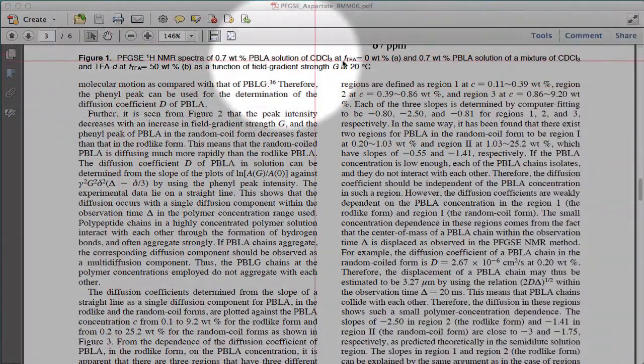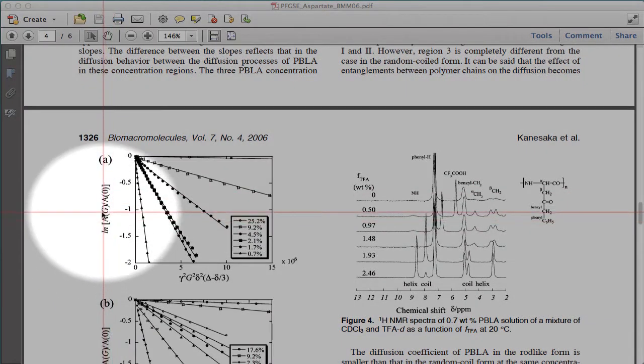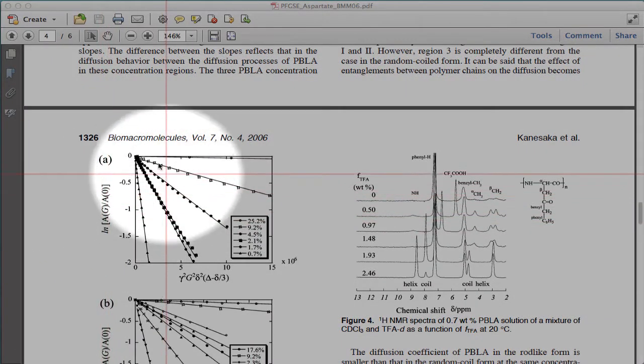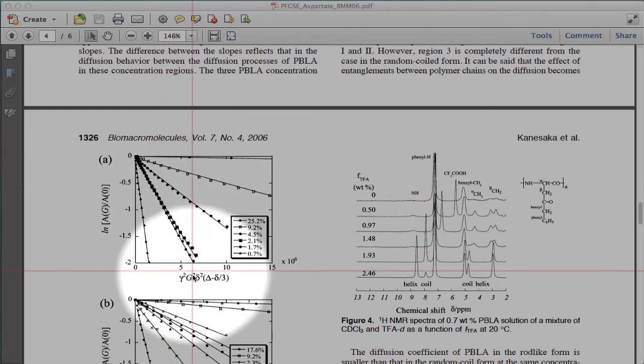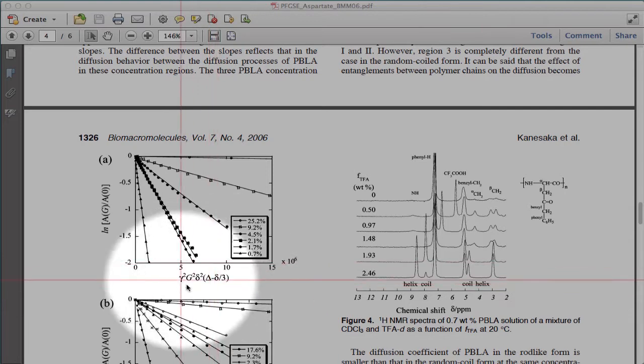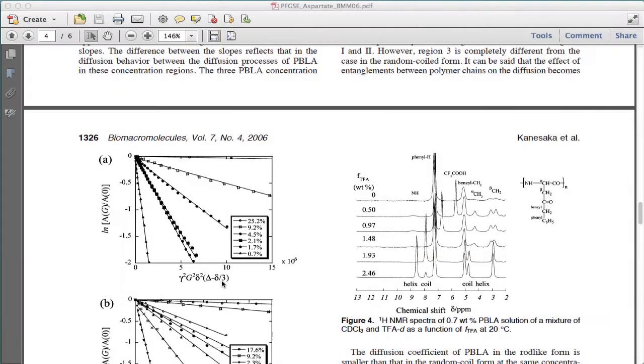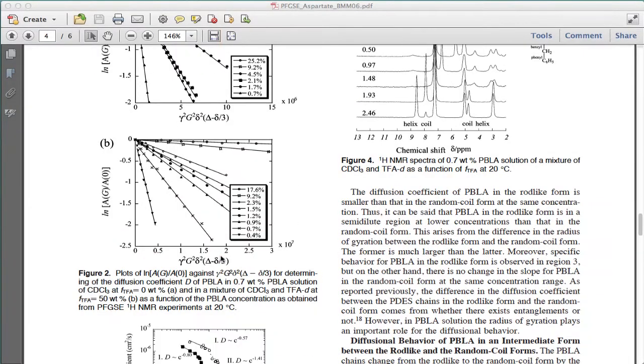And again, very detailed figure captions that describe what's going on. Again, here they normalize the signal to the signal at zero intensity so they can show a whole range of data all on one plot, so that you can quickly see what's going on. This is a very nice way to plot your data where, in a sense, the slope is directly related to the diffusion coefficient directly. Instead of just plotting it as a function of g-squared, they plot it as a function of all the constants as well, so that the slope directly gives the diffusion coefficient. A nice way to do it, a nice way to summarize all their data.